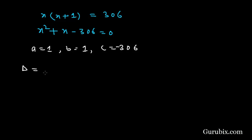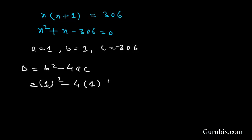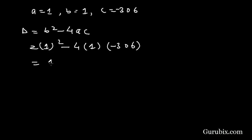Now we find the discriminant: D equals b squared minus 4ac. Since b is 1, it is 1 squared minus 4 times 1 times negative 306, which gives 1 plus 1224. Four times 6 is 24, four times 3 is 12, making it 1200 plus 24 plus 1, so the discriminant is 1225.